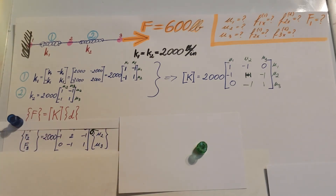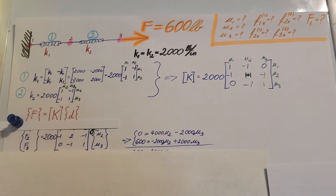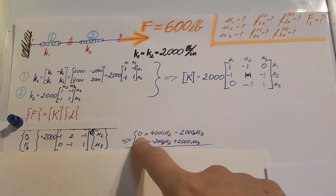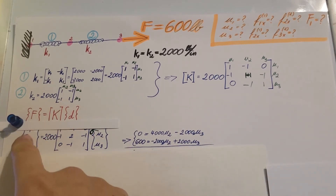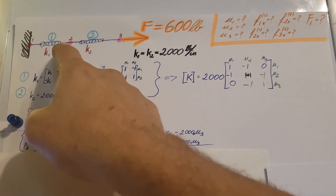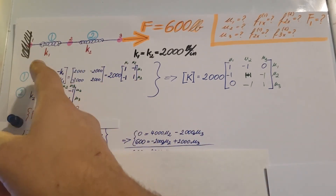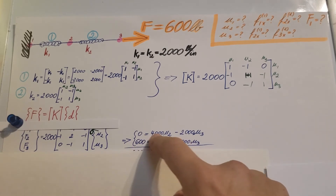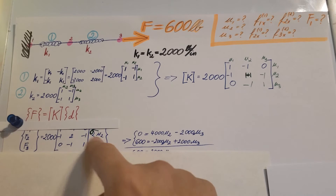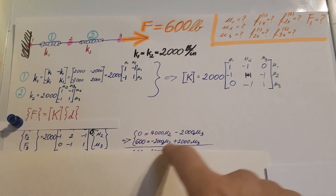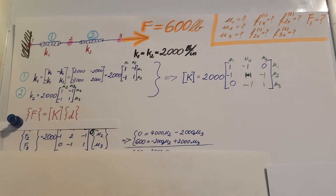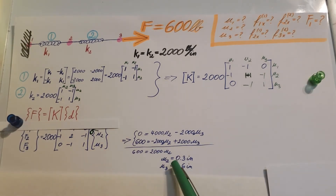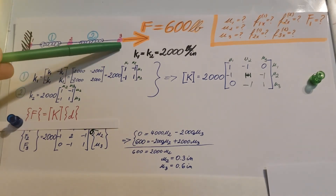Those two equations form a system of two equations. F2 has no global force applied, so it's zero. F3 is given as 600. So 0 and 600 equals the reduced matrix multiplied by the displacements, times 2000. Solving this system of equations gives us U2 equals 0.3 inches and U3 equals 0.6 inches — the displacements at node 2 and node 3.